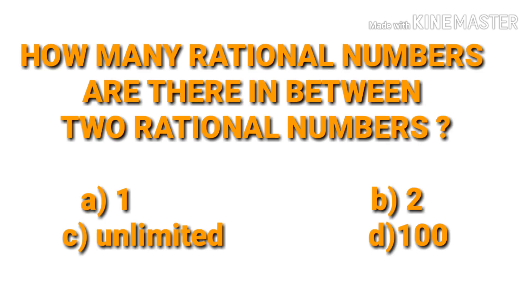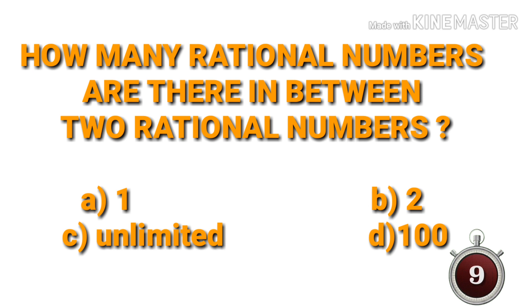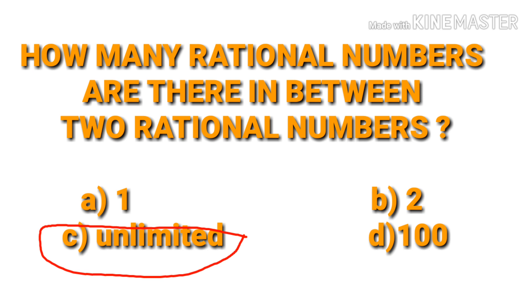How many rational numbers are there in between two rational numbers? The answer is unlimited — they are not countable.